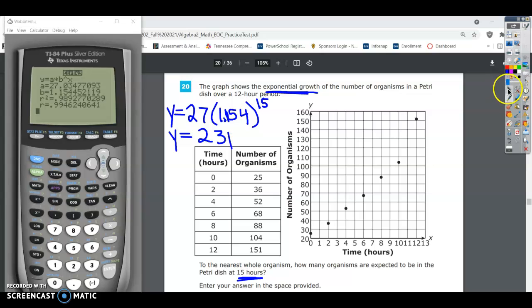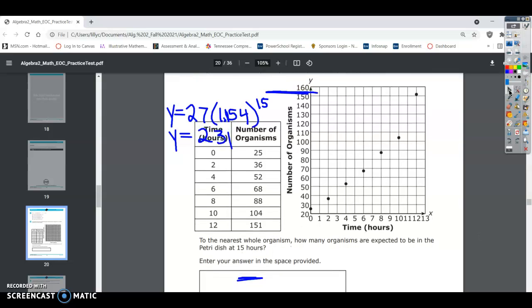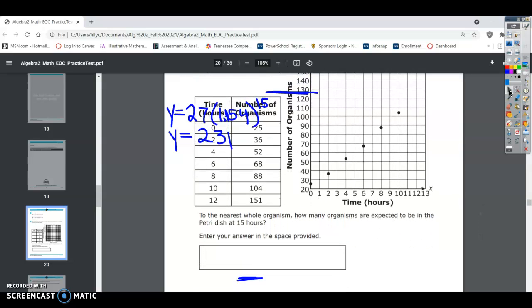Down here below, it's going to say enter your answer in the space provided. So you're just going to put 231. There's roughly 231 organisms after 15 hours in that petri dish. So the answer to number 20 is 231.